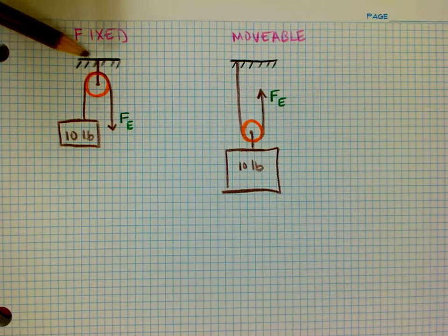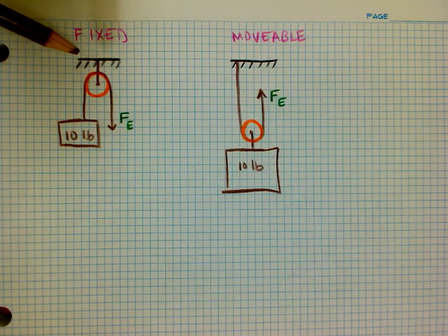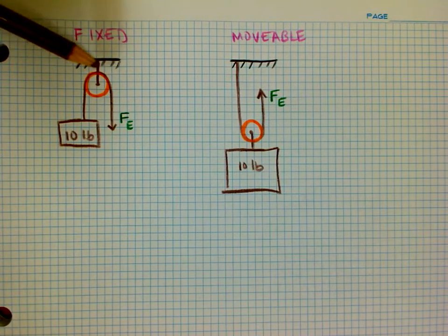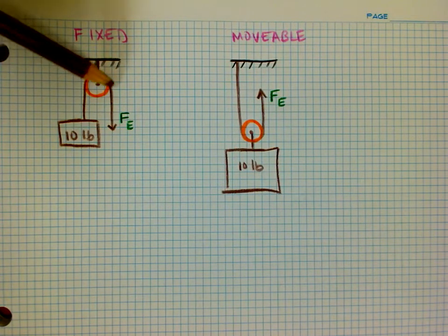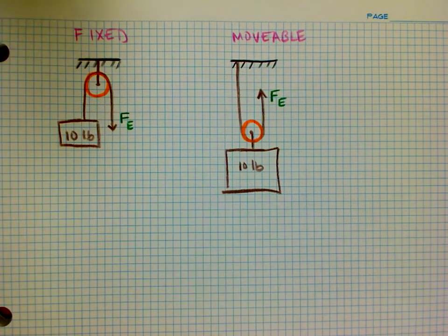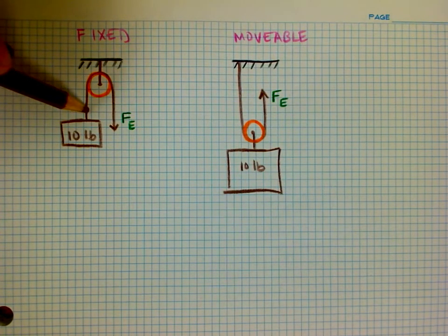First of all, with the fixed pulley — this little black line with dashes represents a mounted, immovable surface, something that's going to stay put. I've tied the pulley to that, like maybe a ceiling, with a pulley hanging from it. I've got a 10-pound weight, I'm going to drape a rope over the top, and I'm going to pull down, so my effort force is going downward.